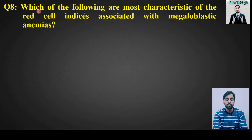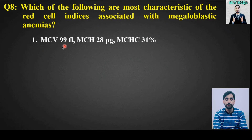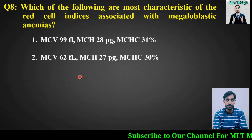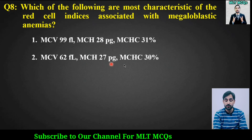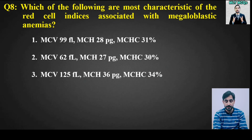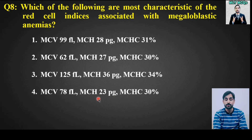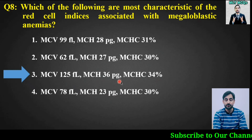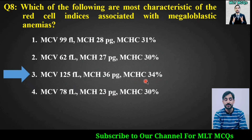MCQ number 8: Which of the following are most characteristic of the red cell indices associated with megaloblastic anemias? Options are: MCV 99 fL, MCH 28 pg, MCHC 31%; or MCV 62 fL, MCH 27 pg, MCHC 30%; or MCV 78 fL, MCH 23 pg, MCHC 30%. The right answer is option number 3: MCV 125 fL, MCH 35 pg, MCHC 34%, which are most characteristic of megaloblastic anemias.